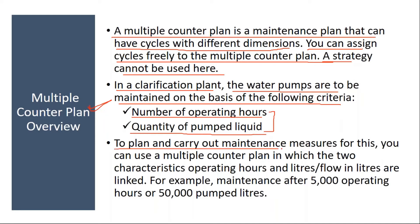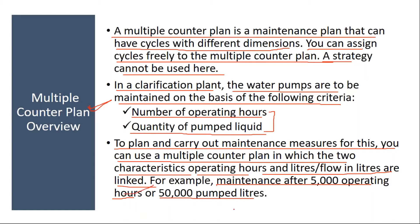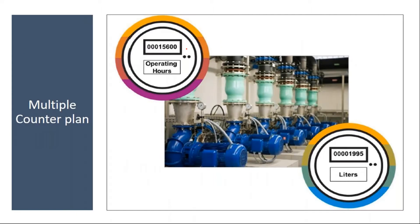To plan and carry out maintenance measures for this, you can use a multiple counter plan in which two characteristics — operating hours and liters flow in liters — are linked. For example, you are going to do maintenance after 5000 operating hours or 50000 pump liters, whichever is earlier. So you are considering two counters: machine running hours or pumped fuel. This is the multiple counter plan — for your equipment, you do preventive maintenance considering two counters, either operating hours or by consumption of liquid fuel.